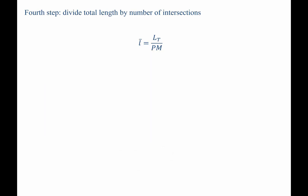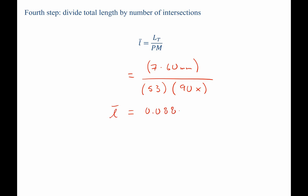Now we're ready to go to our fourth and final step, which is to divide the total length by the total number of intersections. L-bar, that's our mean intercept length, equals L-sub-T, the total length of lines. There were 7 lines times 60 millimeters a piece, giving us 420 millimeters. Divided by P, the number of intersections — that's 53 — multiplied by M, the magnification, which if you've done this in the book was 90X. Taking this together, we find that the mean intercept length is 0.088 millimeters.